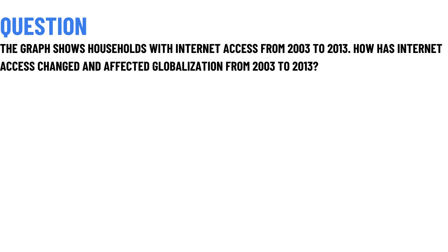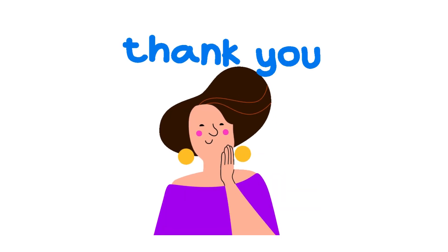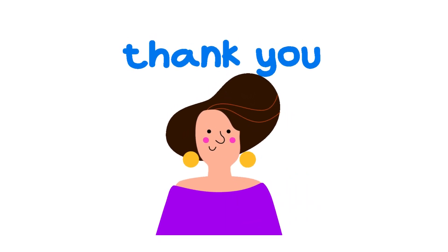Our today's question is: the graph shows households with internet access from 2003 to 2013. How has internet access changed and affected globalization from 2003 to 2013? The correct answer is: a 30% increase in internet access has sped up globalization. That's the correct answer of the question.